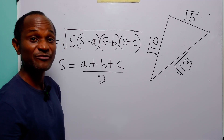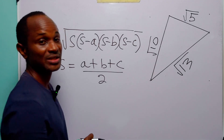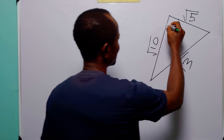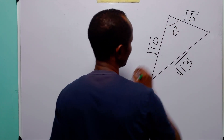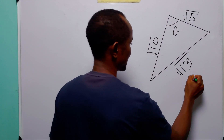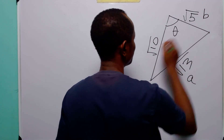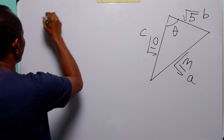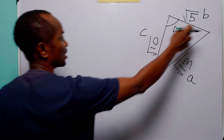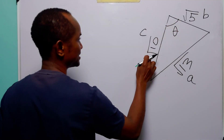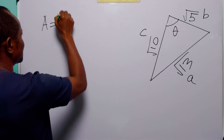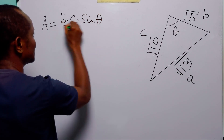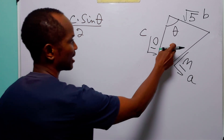So in this math tutorial I am going to show you three very simple ways of finding the area of this triangle. In the first method, we are going to include an angle and call it theta. We call one side b, another side d, and another side c, and we are going to use the formula: Area = (b × c × sin θ) / 2.